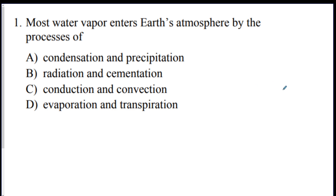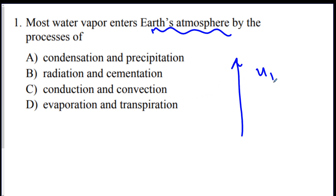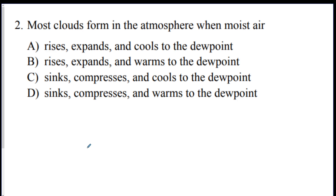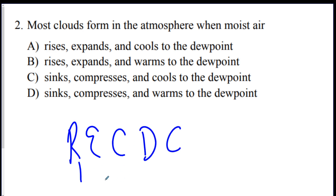Practice questions — pause the video and see if you get the answer. Number one: most water vapor enters Earth's atmosphere by what process? Since it has to go up into the atmosphere, the answer is evaporation and transpiration. Number two: most clouds form when moist air does what? Remember RECDC — rises, expands, cools to the dew point, and condenses — so A is the best answer. Air sinking would not form clouds.